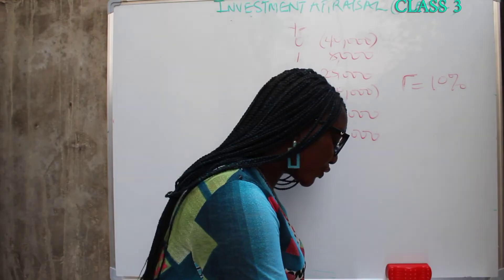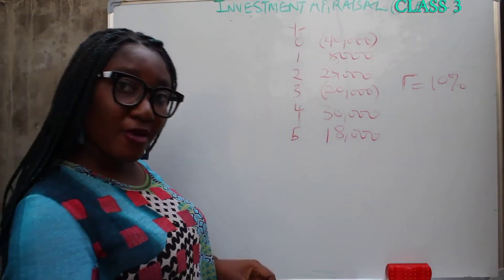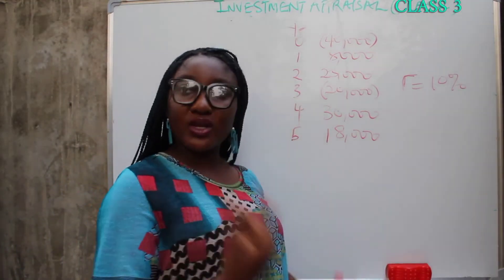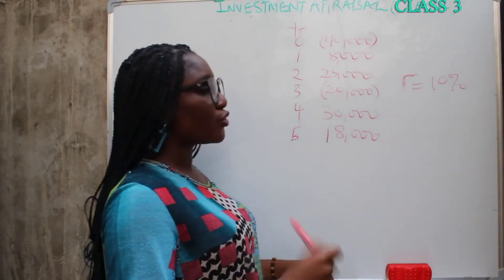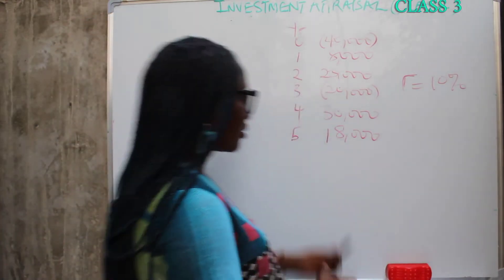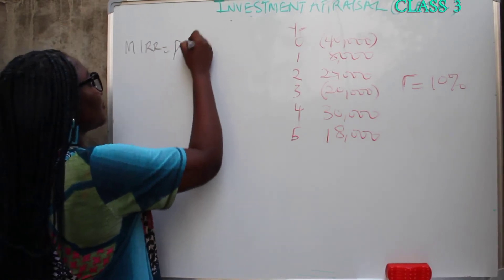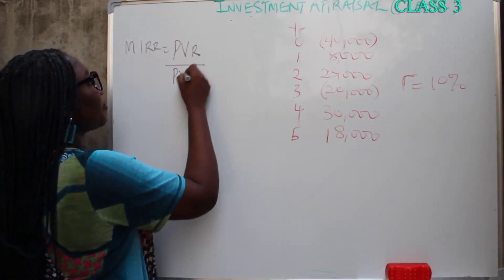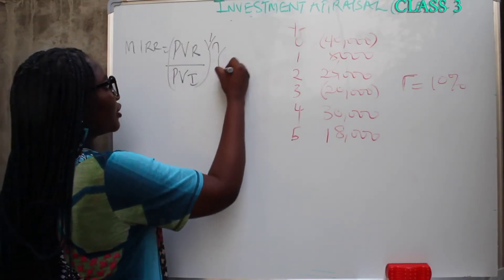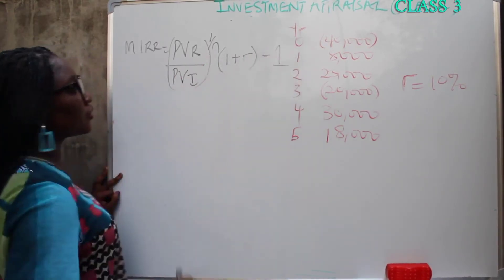MIRR shows here because your outflows are in two different stages, unlike the former example where outflows were in just one phase. But in the exam, if you see that kind of question where they ask you to calculate MIRR, you still solve it. So record the formula: present value of revenue over present value of investment, raised to 1 over N, into 1 plus R minus 1.